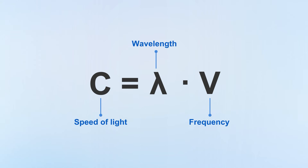Next is the range. The frequency and wavelength of radio waves are inversely proportional — the higher the frequency, the shorter the wavelength, the weaker the diffraction ability, but the direct penetration ability is strong. However, signal penetration loses a lot of energy, so the transmission distance is shorter.